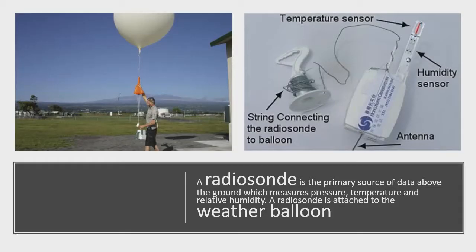A radiosonde is the primary source of data above the ground, which measures pressure, temperature, and relative humidity. A radiosonde is attached to a weather balloon.